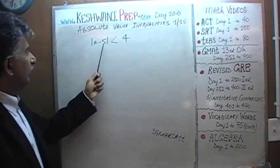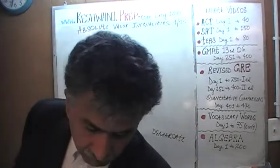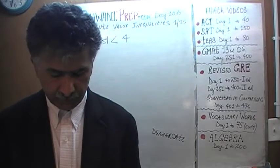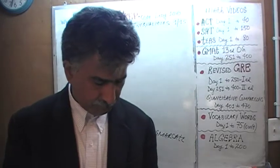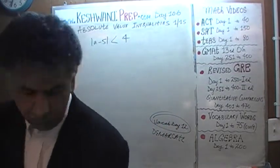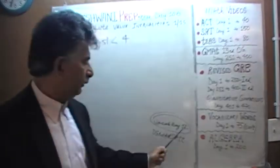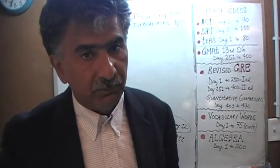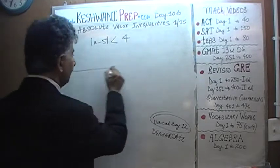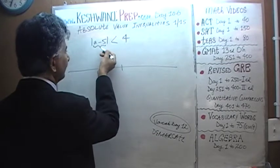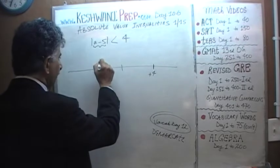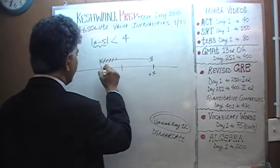So let's do the inequality: absolute value of A minus 5 is less than 4. The word 'demarcate' means to put a boundary around something, to outline or restrict something. Now, this value is going to be less than 4 if A minus 5 itself falls between negative 4 and positive 4. We put open circles at those endpoints — open circle means we do not have an equal-to sign; if we had an equal-to sign, we would close the circle.